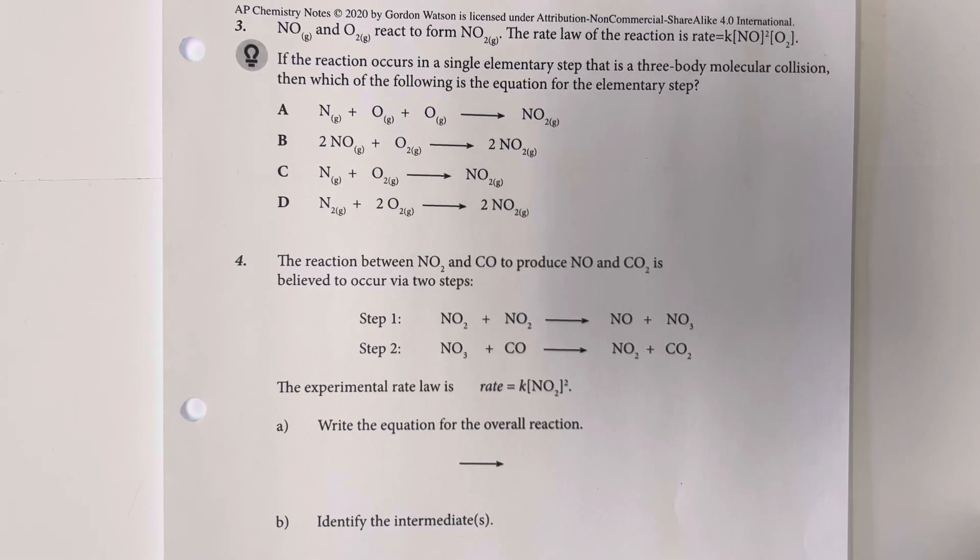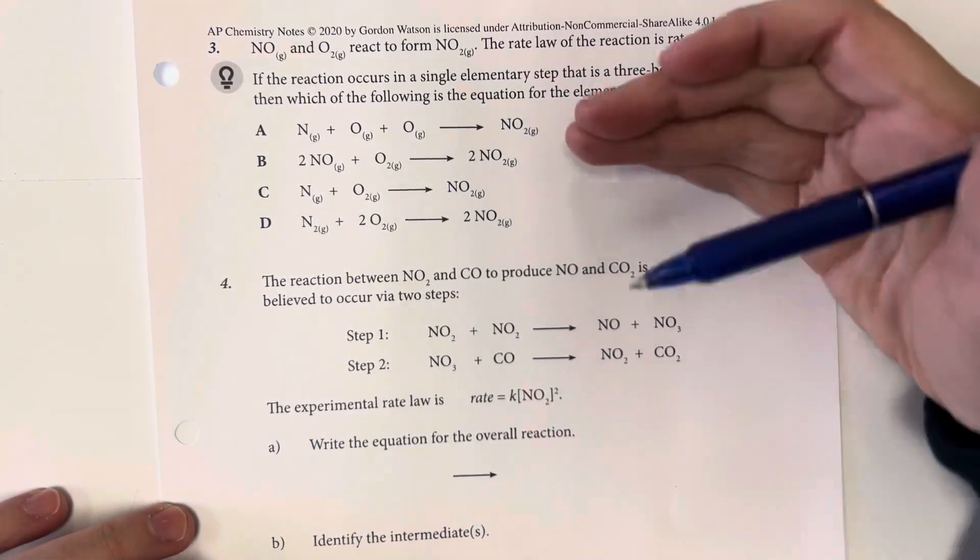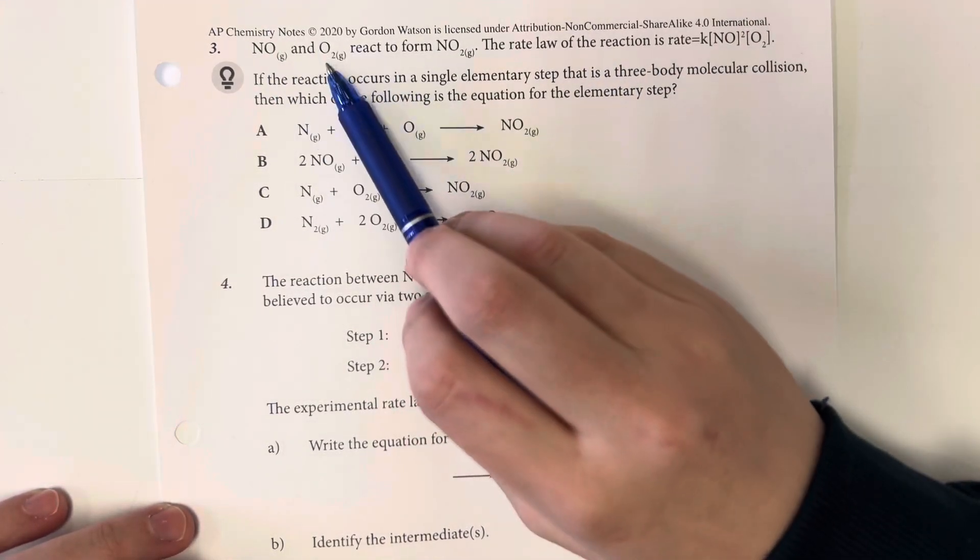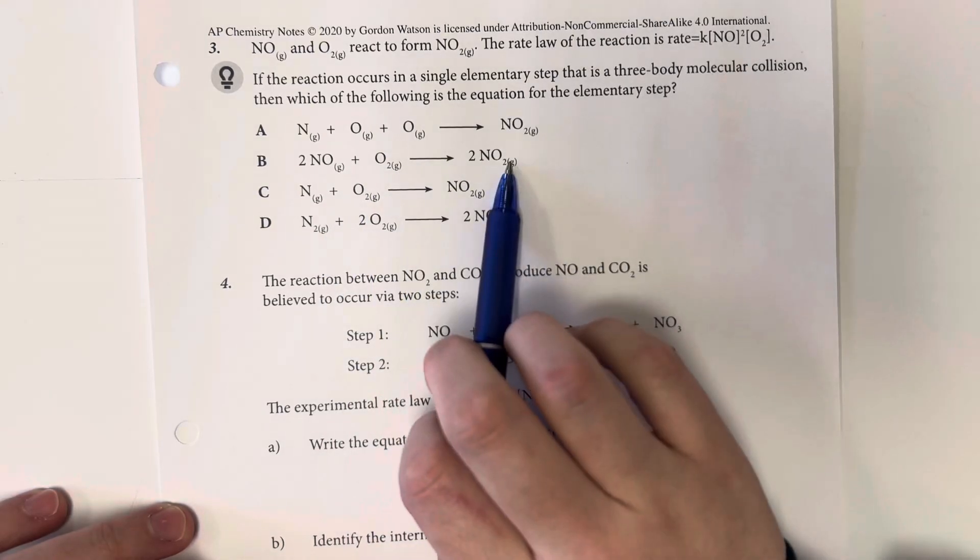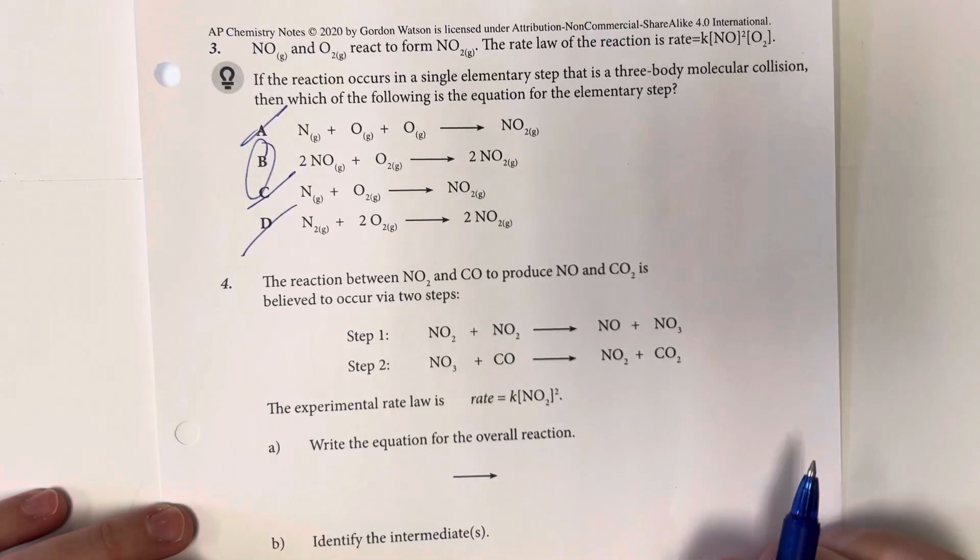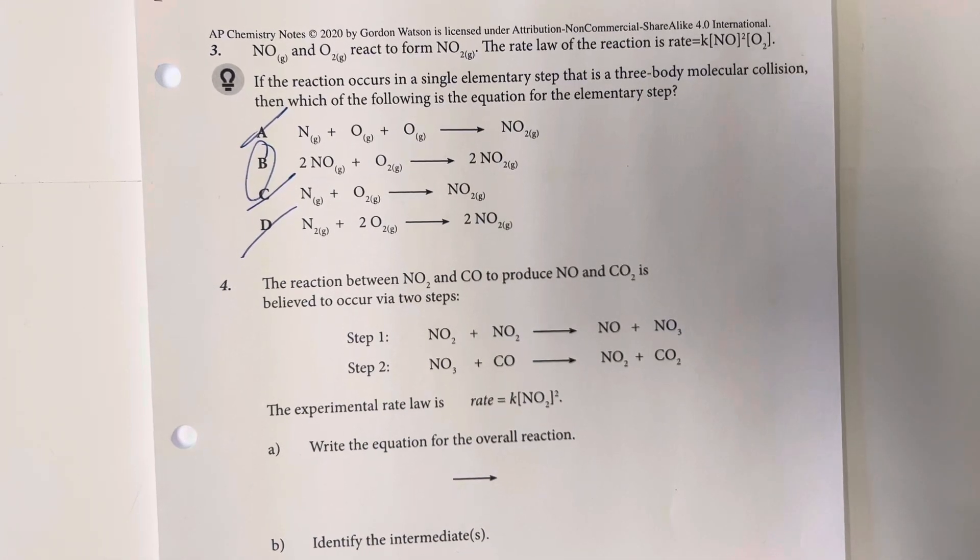then which of the following is the equation for that elementary step? So it says that we are going to be forming in a single elementary step, so that means we only get one shot at this. We are not going to have multiple pieces, so that means I need nitrogen monoxide and oxygen forming nitrogen dioxide, and the only reaction where that is present is going to be option choice B, and so that is going to be my final answer.